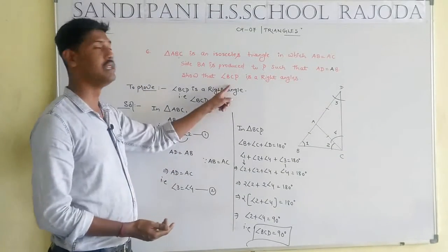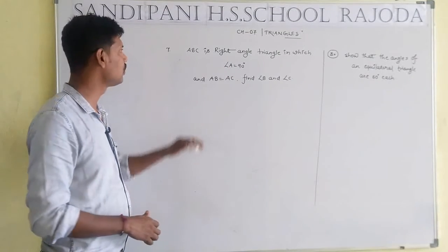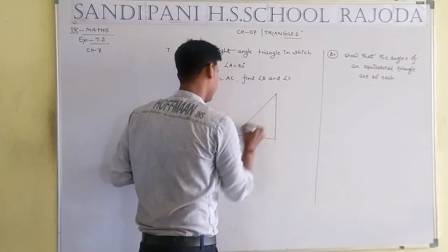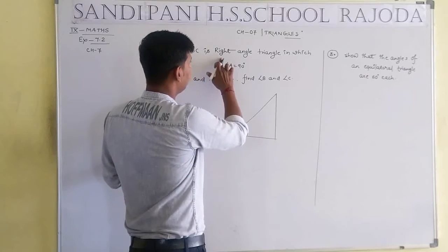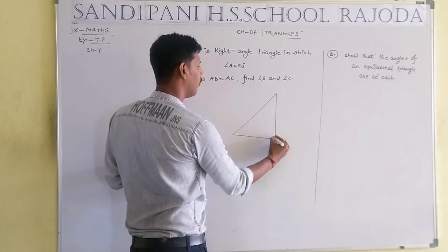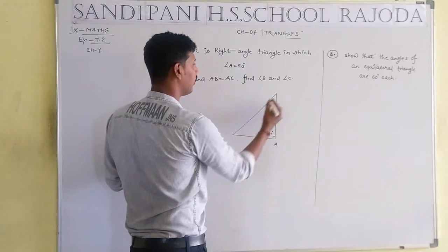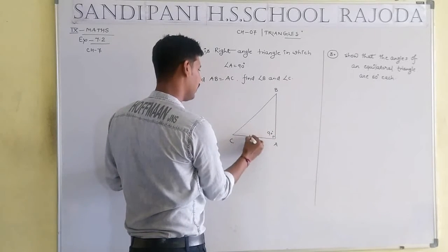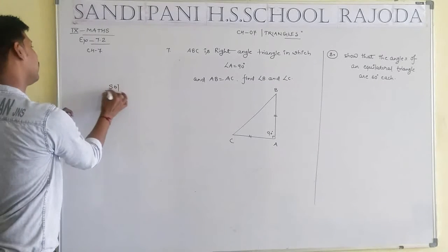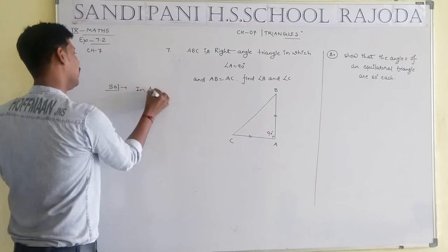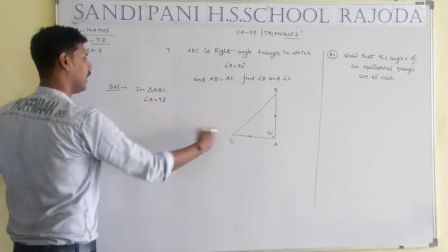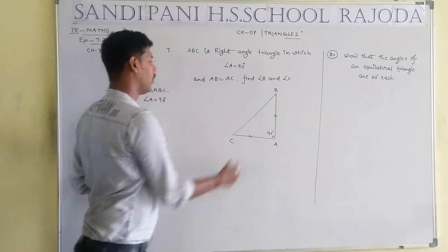Question number 7: ABC is a right-angle triangle. The meaning of a right-angle triangle is that one angle equals 90 degrees. In triangle ABC, angle A equals 90 degrees and AB equals AC. Find angle B and angle C.